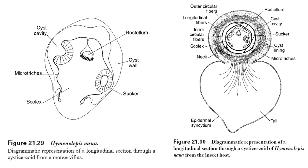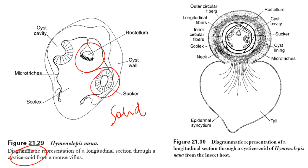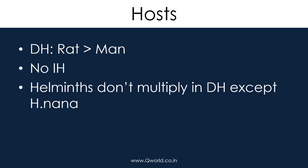The larval form of Hymenolepis nana is known as the cysticercoid, and it is solid. You can see the rostellum, cyst wall, and suckers. This is the evaginated scolex.